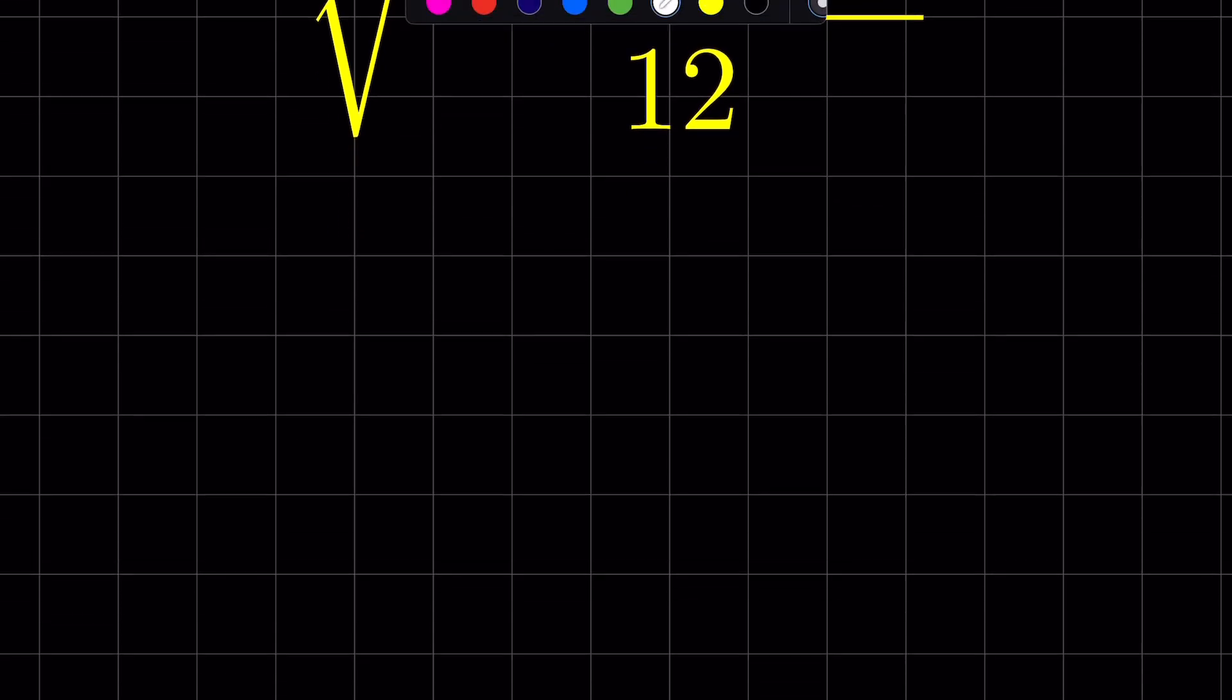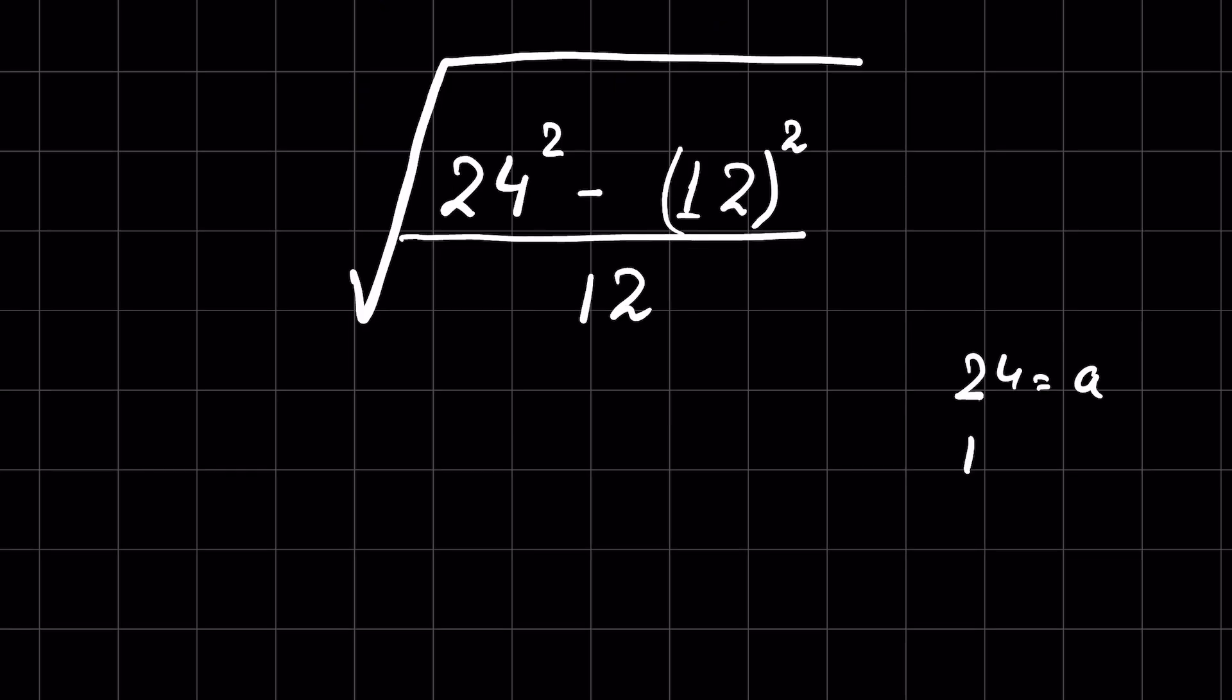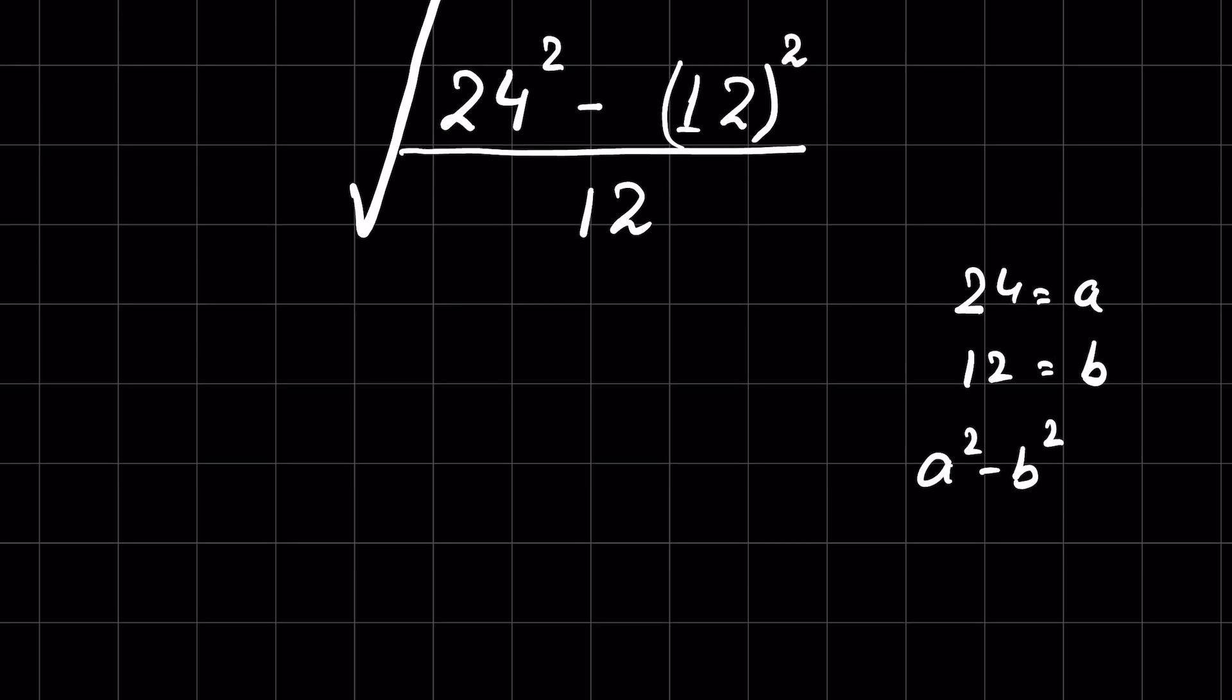First, we have 24 square minus 144. We can write it as 12 square, because square of 12 is 144, then upon 12 under square root. Now if we consider 24 as a and 12 as b, then this is in the form of a square minus b square, difference of squares, and this is equal to a plus b times a minus b.